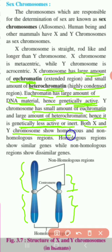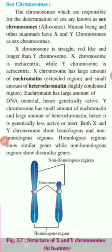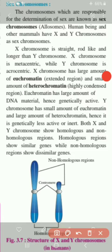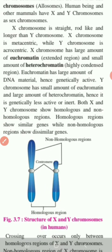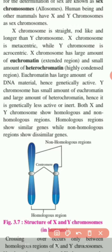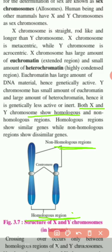Both X and Y chromosomes show homologous and non-homologous regions. Homologous regions show similar genes while non-homologous regions show dissimilar genes.